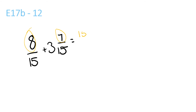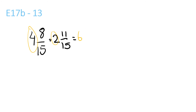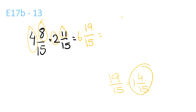8 plus 7 is 15. Bring 3 over — there's nothing to plus it with, over 15. The top and the bottom are both the same, so it equals 1. Then you get 3 plus 1, which is equal to 4. 4 plus 2 is 6, and 8 plus 11 is 19 over 15, which is equal to 1 and 4 over 15. You have 1 and 4 over 15 plus 6, giving 7 and 4 over 15.